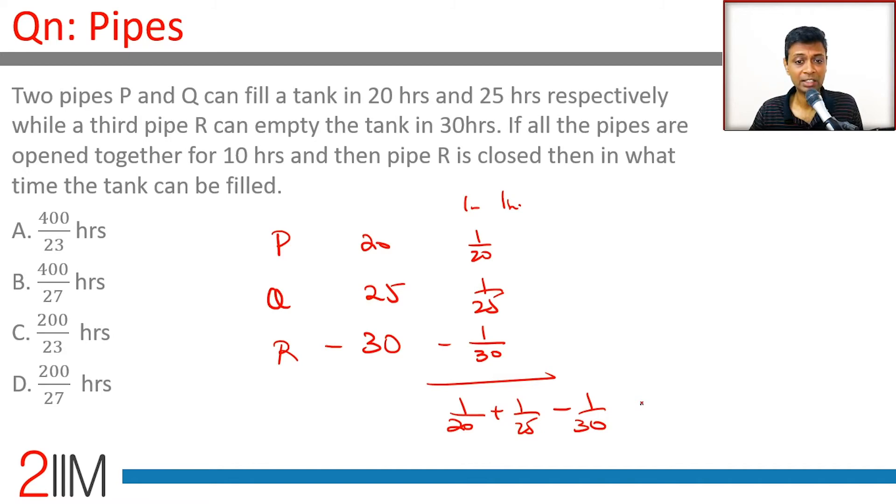After some time pipe R is closed. Let's assume that pipes P and Q are open for K hours. K hours pipe P will fill K/20, pipe Q will fill K/25.